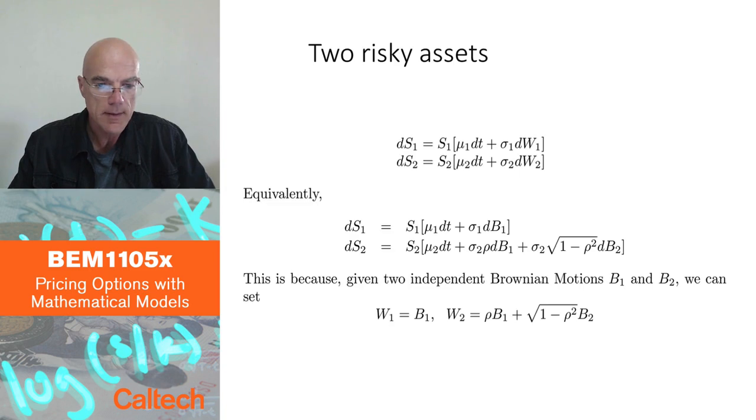Moving to the next slide, we'll have still the Black-Scholes-Merton model, which means all the parameters would be constant. So we have two risky assets, S1 and S2, with return rates mu1, mu2, and volatility sigma1, sigma2.